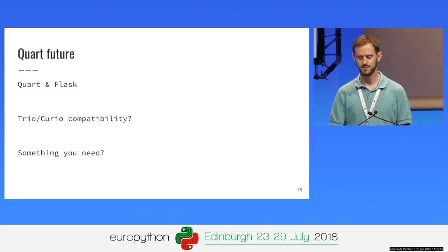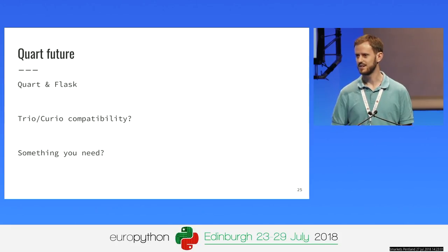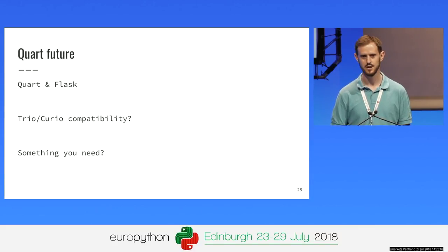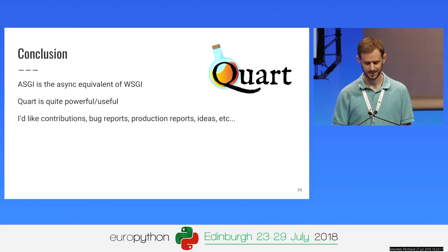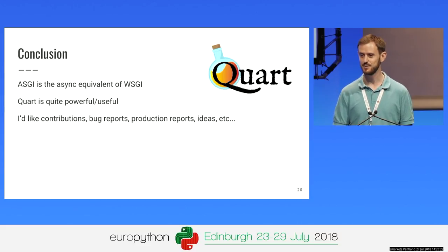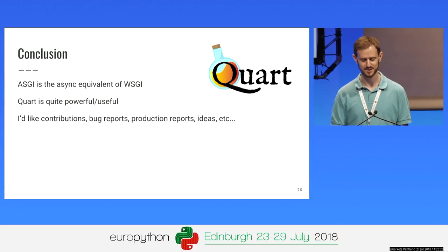Looking to the future: I've started talking with the Flask authors — it would be great if the two could merge in some way and get async stuff directly into Flask. It's also been suggested that Quart and Hypercorn support Trio or Curio, much like G-Unicorn supports eventlet and Gevent. I'm open to suggestions. To conclude: hopefully I've convinced you that ASGI is a legitimate async equivalent of WSGI, and that Quart is useful. Bug reports, contributions, and suggestions are all very welcome. Thank you.